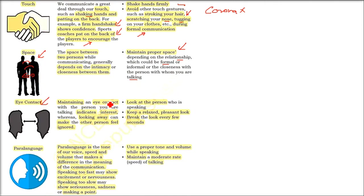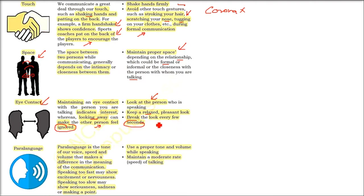Eye contact. Maintaining eye contact is very important because it shows your interest. If you are looking here and there, that means you are ignoring the other person — even if you are not, they will feel that way. A good communication means maintaining eye contact. Look at the person directly, keep relaxed, give a pleasant look, and smile. Break your look every few seconds so it is not regarded as a stare.